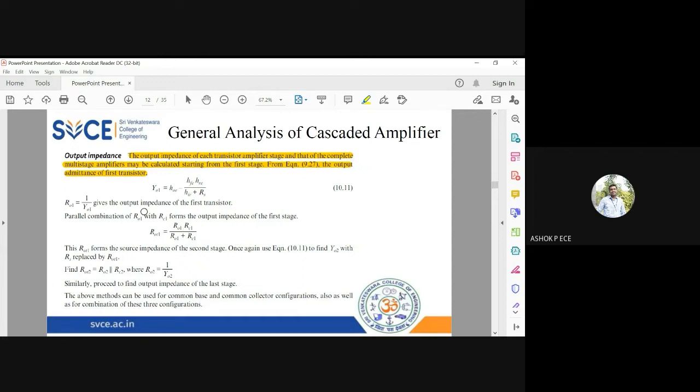And when you see resistance in parallel, you will be applying the parallel formula. And when you see the resistance in series, you can accordingly use the formula for resistance in series. So similarly, proceed to find the output impedance of the last stage.